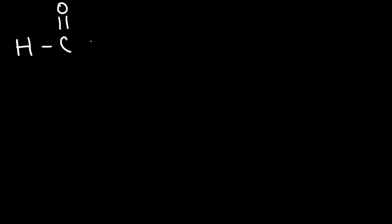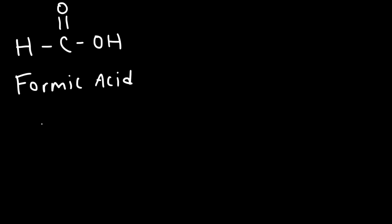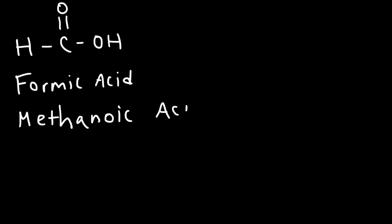In this video we're going to focus on naming carboxylic acids. So let's start with some common examples. Here we have a one-carbon carboxylic acid molecule and the common name for this is formic acid. The IUPAC name for it is called methanoic acid since we have one carbon in this molecule.